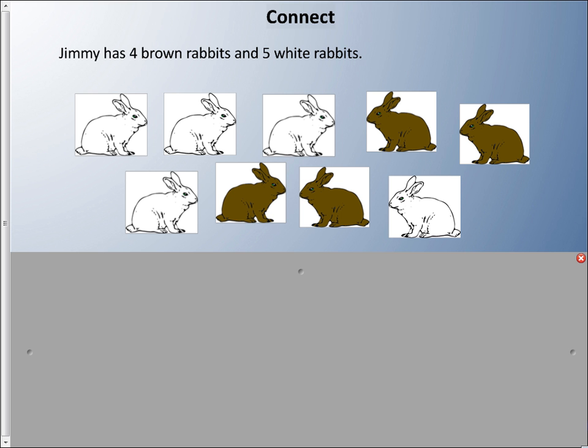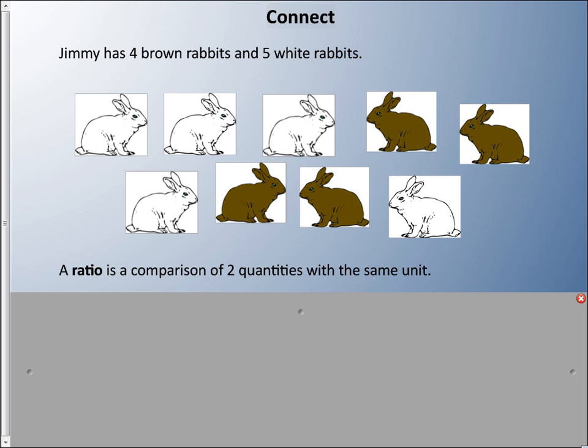Let's say Jimmy has four brown rabbits and five white rabbits. We're going to talk about something called ratios. A ratio is a comparison of two quantities with the same unit, and we can use ratios to compare the number of white and brown rabbits.